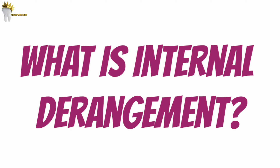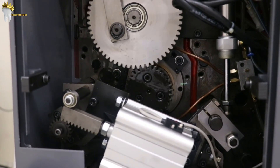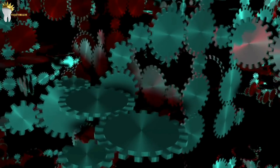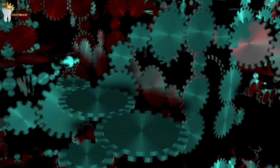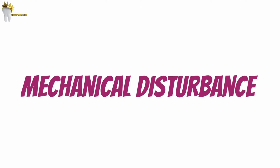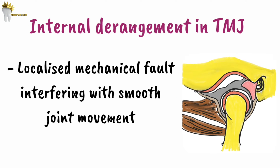So let's get to the terminology — what is derangement? Think about a machine: it's working fine, but if you throw a stone in it, there will be a mechanical disturbance. Or if some part of the machine gets loose or doesn't work, the rest of the machine will not work, creating a mechanical disturbance. That's what the term derangement means — mechanical disturbance. In the case of TMJ, internal derangement means there is a localized mechanical fault which is interfering with smooth joint movement, so the joint is not functioning as it should.